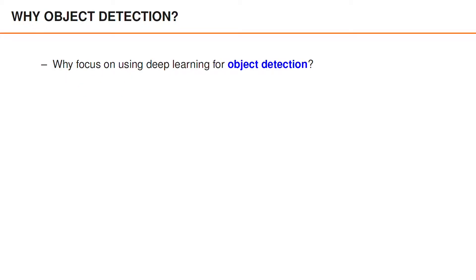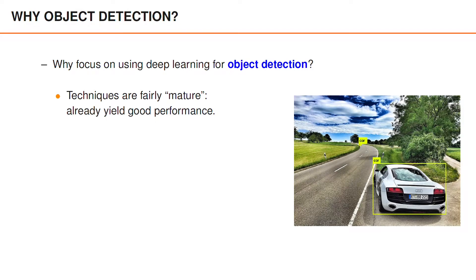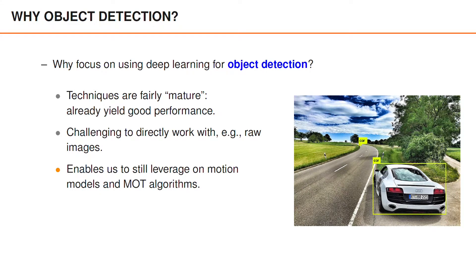In the upcoming videos we focus on performing object detection using deep learning, and you may ask yourself why we want to focus on this particular application. A first argument is simply that the object detection algorithms already perform quite well in many cases. It's also challenging to directly make use of, say, an image in a multi-object tracking algorithm, and we can therefore simplify the problem substantially by first detecting objects using deep learning. Another nice feature is that these object detections are precisely the type of input that our multi-object tracking algorithms seek, where an object can now be modeled as a point object. This means that we can leverage all the algorithms studied in this course, which also implicitly means that you can leverage information about how objects move and the models for appearance and disappearance of objects.